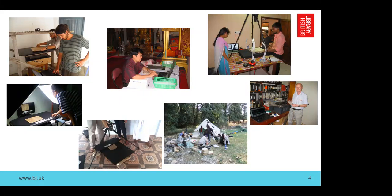There are some nice images here — the top left one is where the copy stand broke, but the team thought outside the box and used a weaving loom with the camera placed just over the archival material. You can see the variety of places where digitization takes place — we've had projects in monasteries, in people's homes, and some carried out outside due to lack of electricity. This gives a real sense of the variety of different projects we've had.